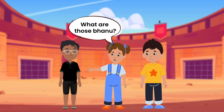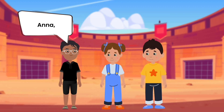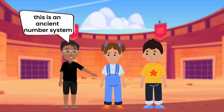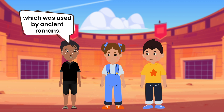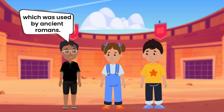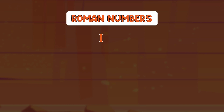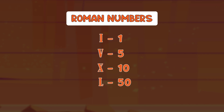What are those, Banu? Anna, this is an ancient number system which was used by ancient Romans. In this number system, I means 1, V means 5, X means 10, L means 50, and C means 100.